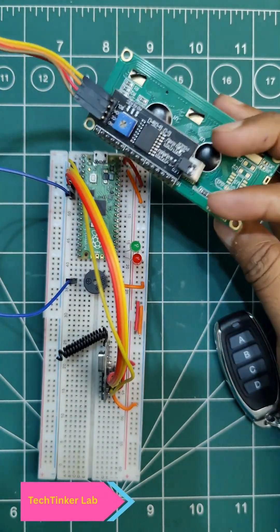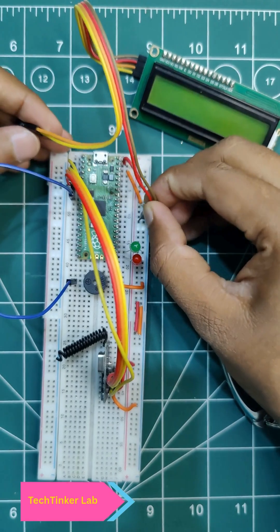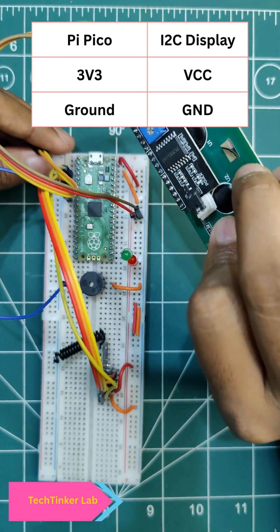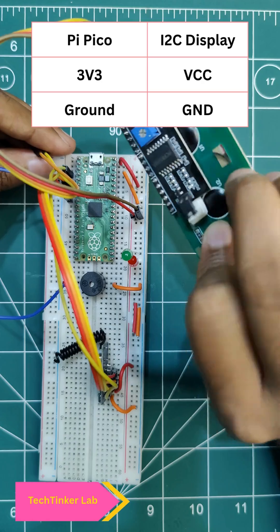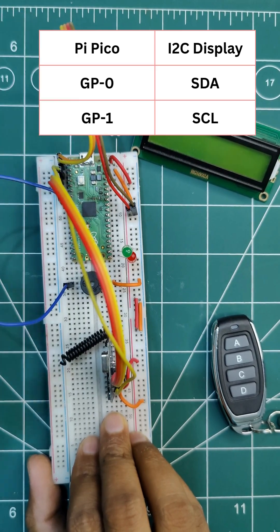Let's connect this I2C display. So ground and VCC, this is the ground and this is the VCC. As you know the display is I2C, so we have SCL and SDA. SDA is this orange one and SCL. So SDA is GP0 and SCL is GP1.